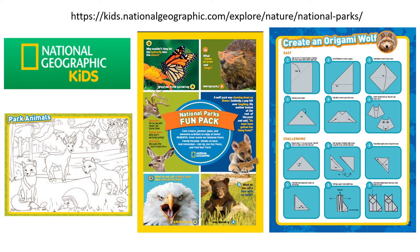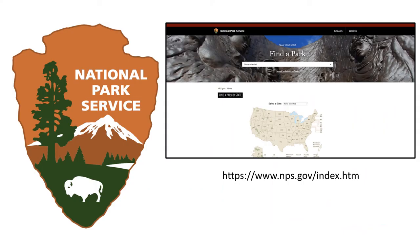Another great website to go to learn more about the national parks is the National Park Service website, which you see the address of on this slide. There's an area for kids, for Junior Rangers, or you can go to the spot where it says 'find a park,' pick the state, and see what national parks are there. You can learn more about the national parks I told you about and some others that we did not have time to visit. So see what you can learn on your own.